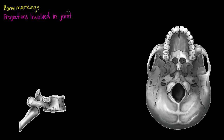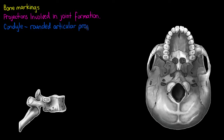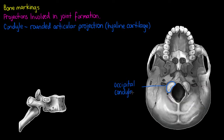The focus of this lesson will be the bone markings related to joint formation, and the first bone marking we're going to take a look at is called a condyle. A condyle is a rounded articular projection — note that an epicondyle is involved in muscle and ligament attachment, whereas a condyle itself is involved in articulation. It often has hyaline cartilage over it. We're outlining the occipital condyle here, which is on the occipital bone of the skull, and it's going to be involved in articulation with the most superior vertebrae.